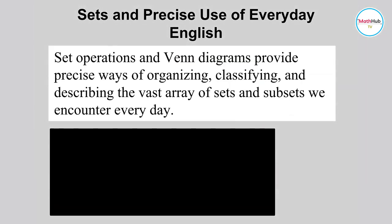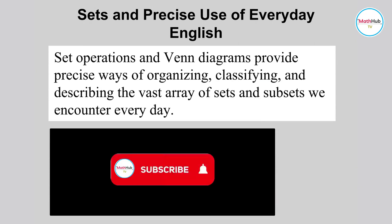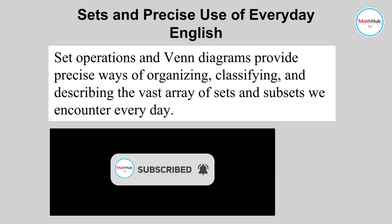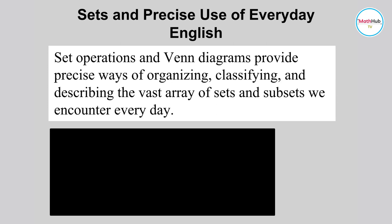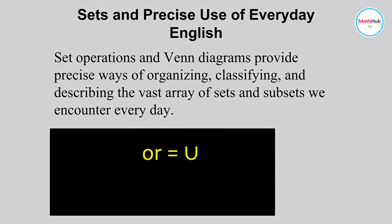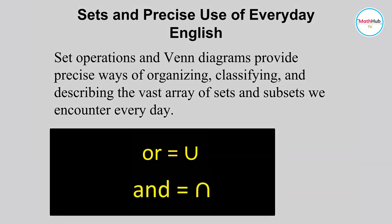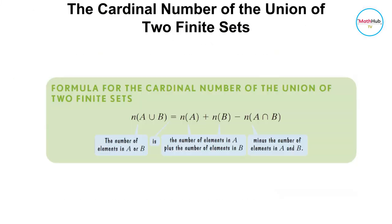Set operations and Venn diagrams provide precise ways of organizing, classifying, and describing the vast array of sets and subsets we encounter every day. The word 'or' refers to the union of sets and the word 'and' refers to the intersection of sets. To find the cardinal number of the union of two finite sets, we use the formula: n(A∪B) = n(A) + n(B) minus n(A∩B).